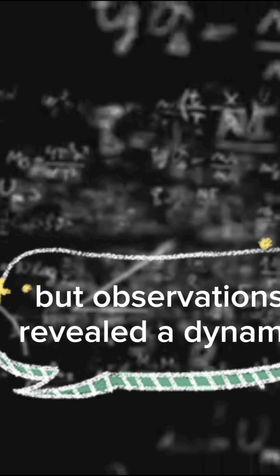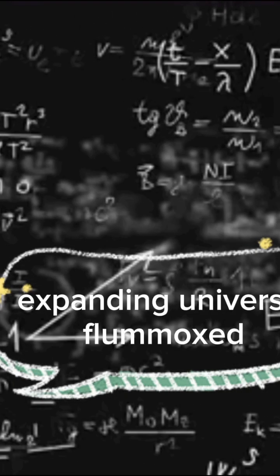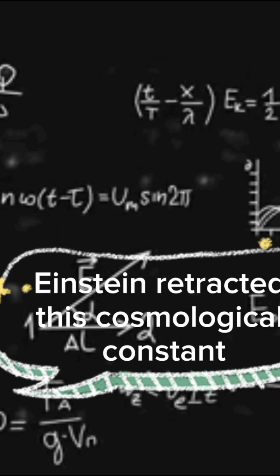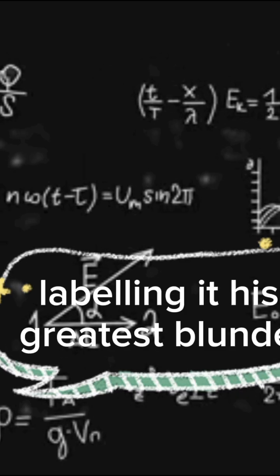But observations revealed a dynamic, expanding universe. Flummoxed, Einstein retracted this cosmological constant, labeling it his greatest blunder.